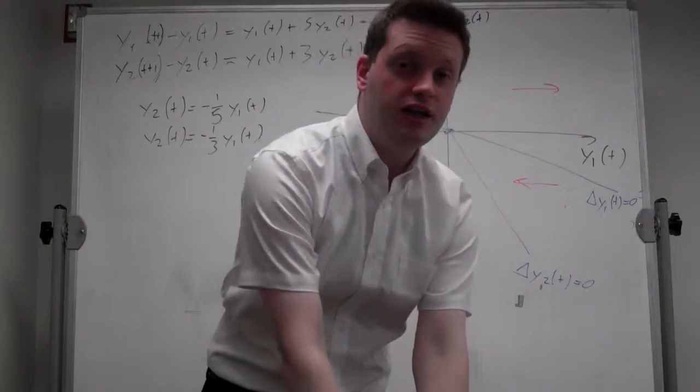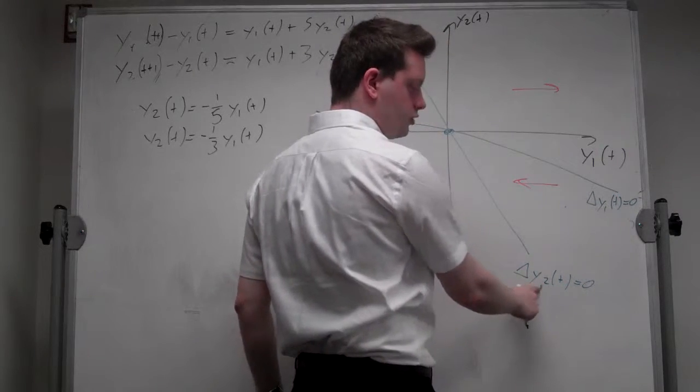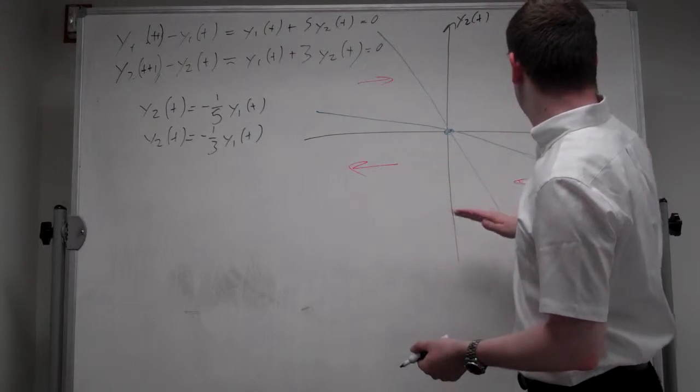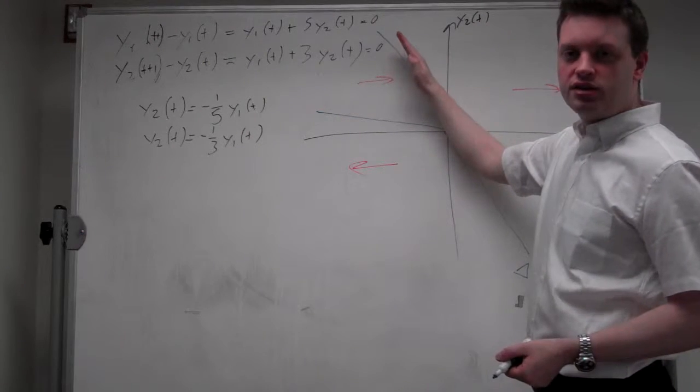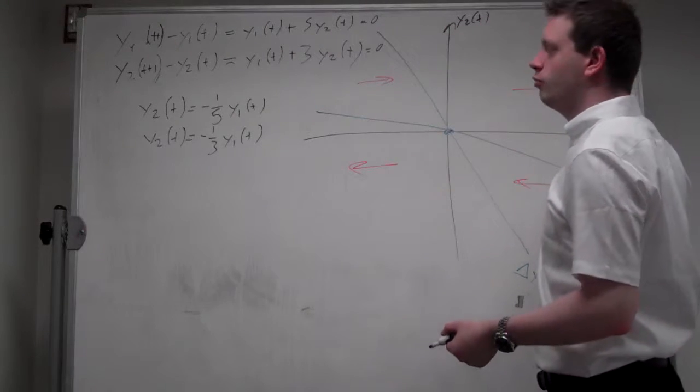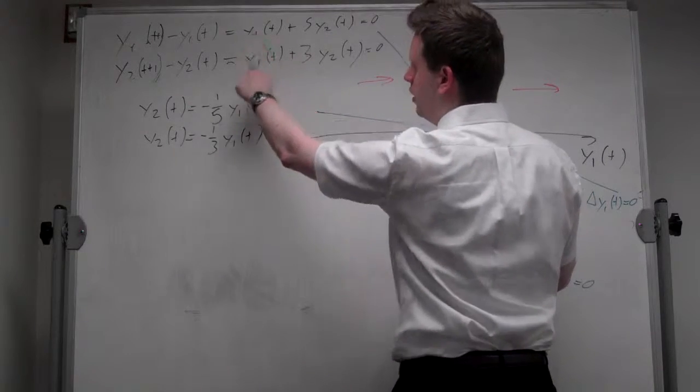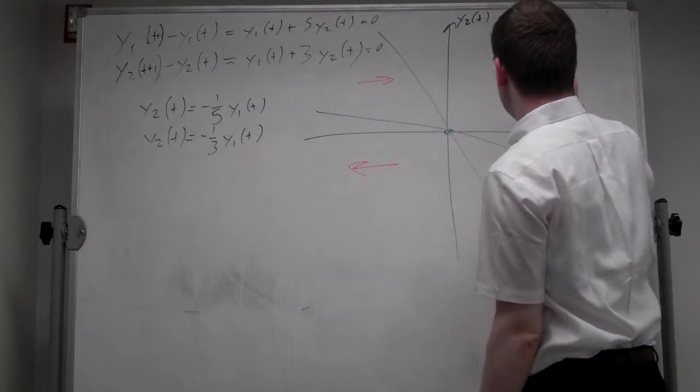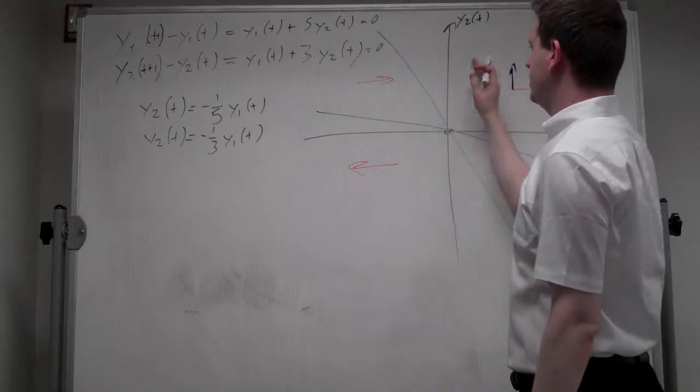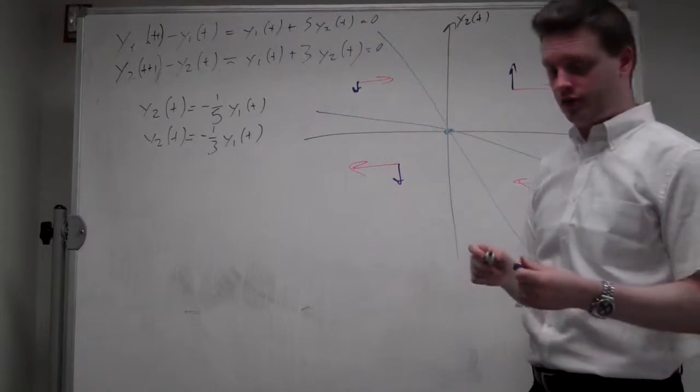Okay, let's repeat that for y_2, delta y_2t equals 0, which we will have to look at this line, and we look to the right of this line, y_1 is larger. If y_1 is larger, this is higher, so y_2 is increasing, so we have an up arrow to the right of this line. And the dynamic points downwards to the left of that line.